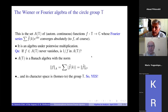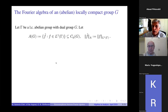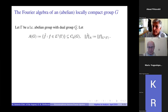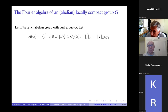You can do the same thing in any locally compact group. Let's try and revise this quickly. Take a locally compact group gamma and call its dual group G. Then I define A of G to be the set of all Fourier transforms of functions which are Lebesgue integrable with respect to Haar measure on gamma.